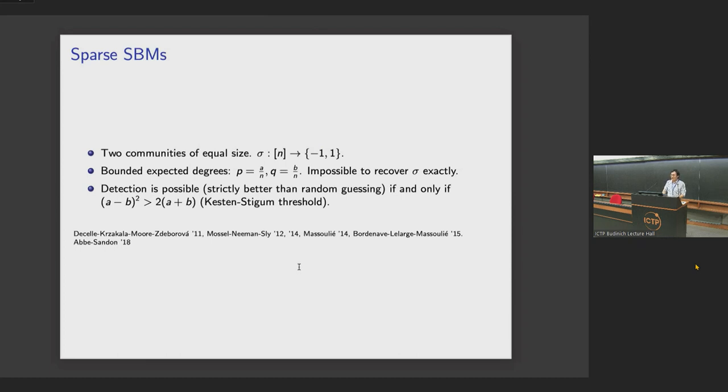Instead of looking at the adjacency matrix, there has been a lot of development to do other methods to reach the detection threshold. What is the sparse stochastic block model setting? The simplest case is still we consider a community partition of equal size. So you can think about sigma as a label function that gives every vertex a label one or minus one, depending on their community. And you have parameter p equals a over n, q equals b over n.